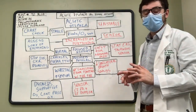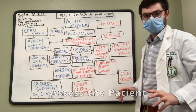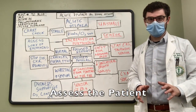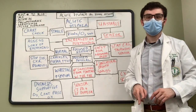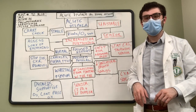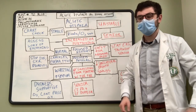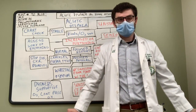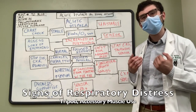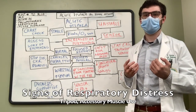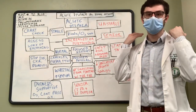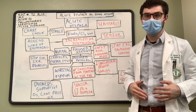Your assessment of the patient starts as soon as you walk into the room. How does the patient look? Are they comfortable or uncomfortable? Are they sitting, standing, or lying down? Are they tripoding, trying to make more room to take a deep breath? Are they using accessory muscles of respiration, such as the sternocleidomastoid or the trapezius? Perhaps they're belly breathing.